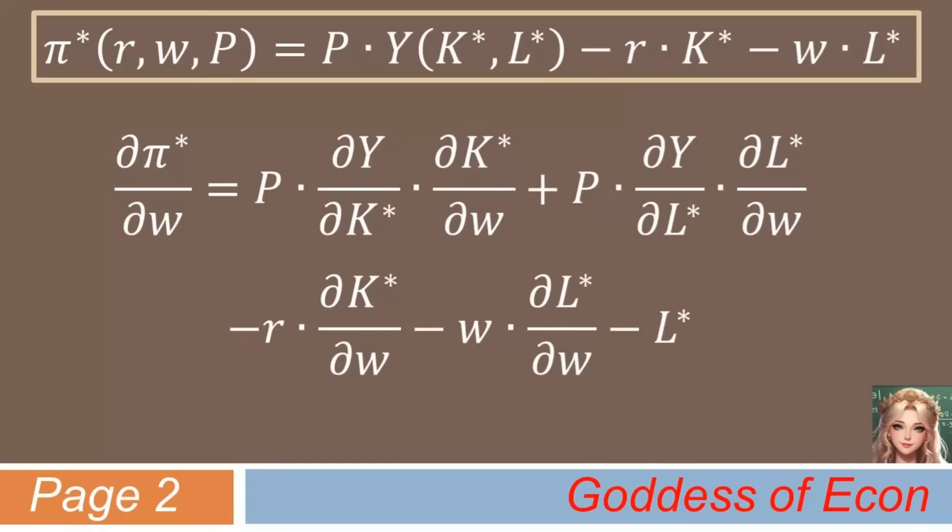The partial derivative of π* with respect to w is price times partial derivative of y with respect to k* times partial derivative of k* with respect to w plus price times partial derivative of y with respect to l* times partial derivative of l* with respect to w minus r times partial derivative of k* with respect to w minus w times partial derivative of l* with respect to w minus l*.